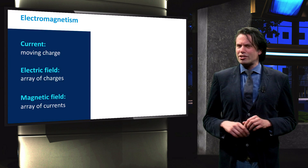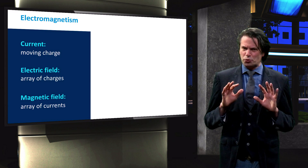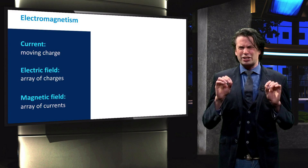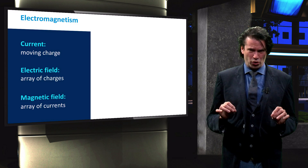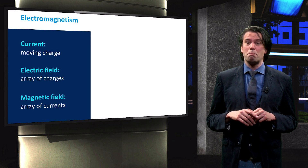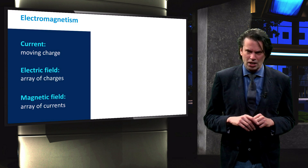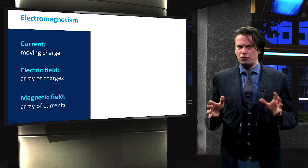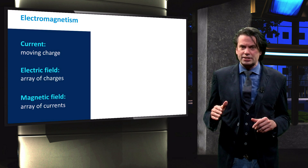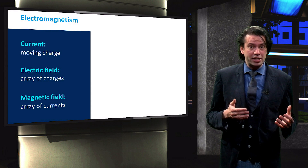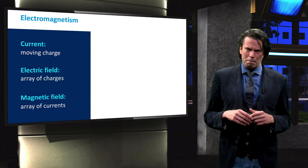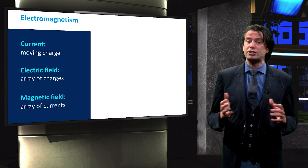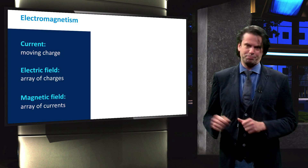It took us until the 19th century to realize that electricity and magnetism are two sides of the same coin, that we call electromagnetism. Both are related to charge. We can recall that electric fields are generated by charges, while magnetic fields are generated by moving charges or currents.